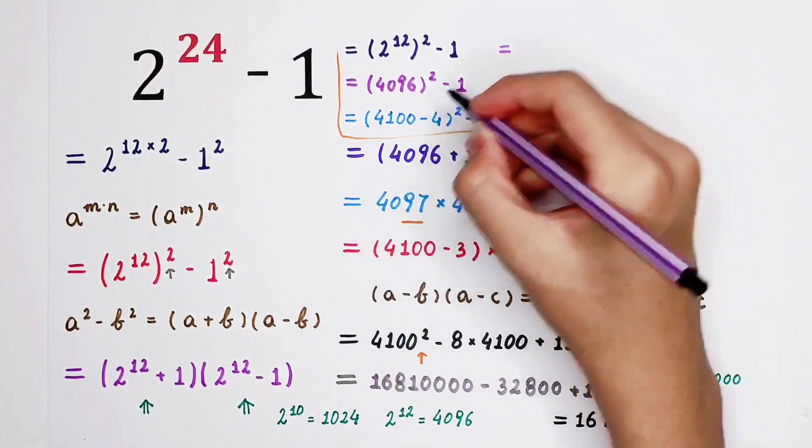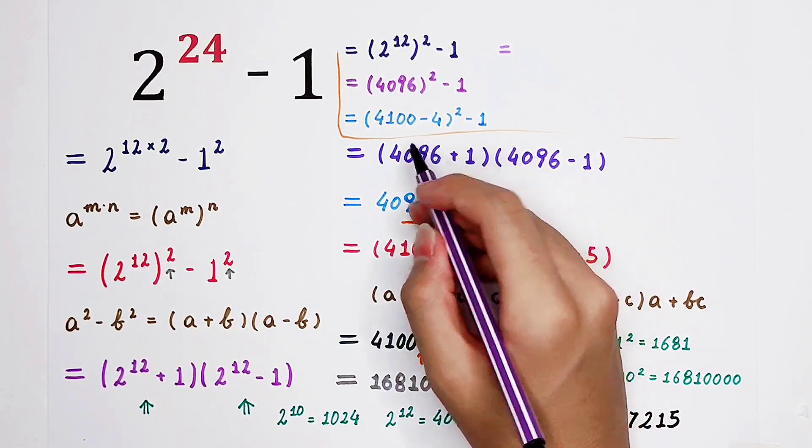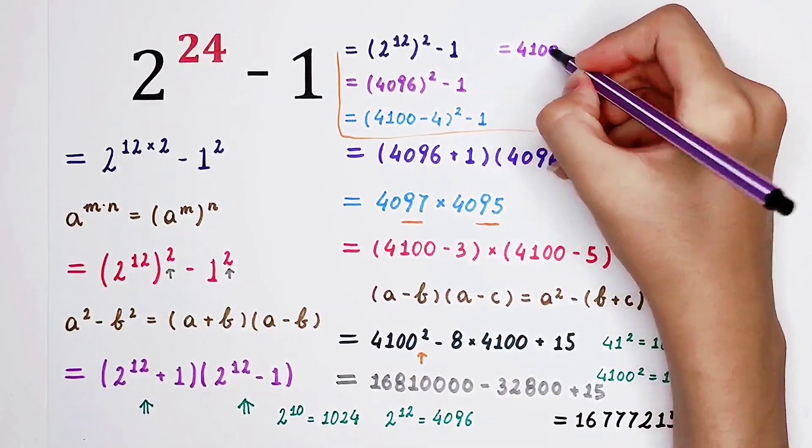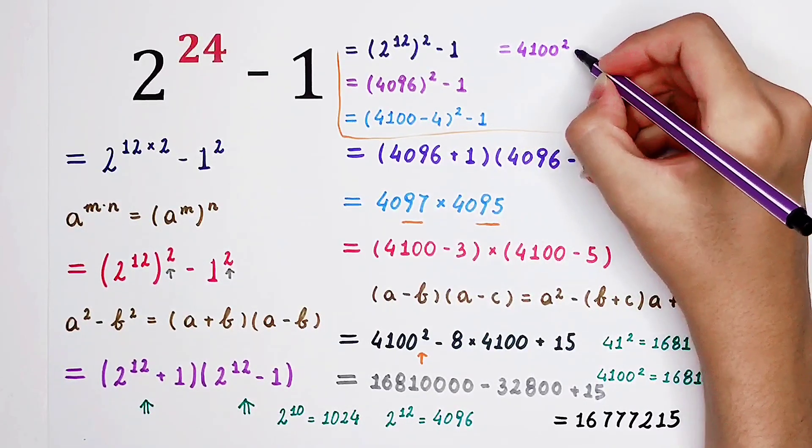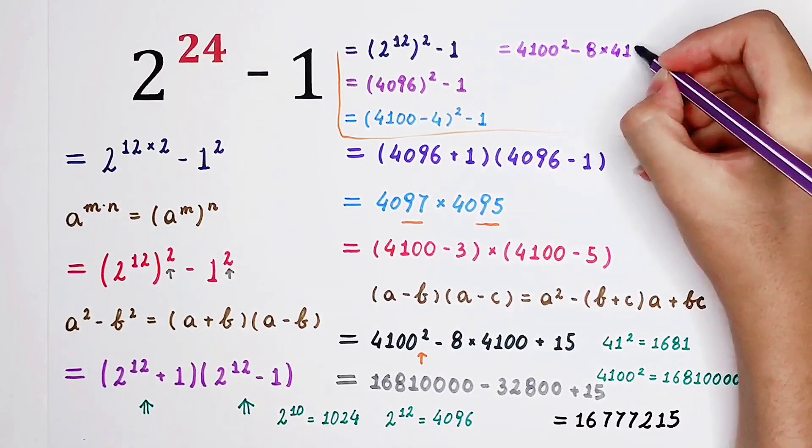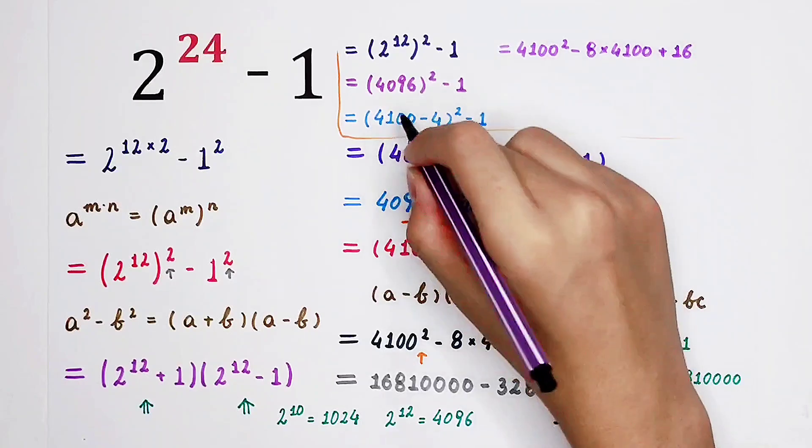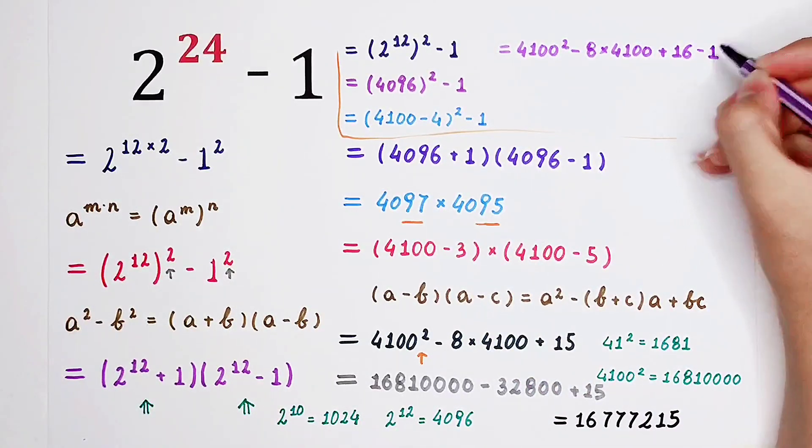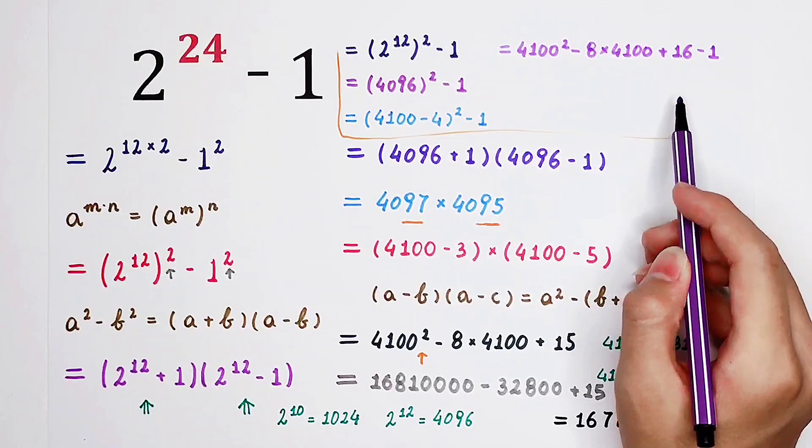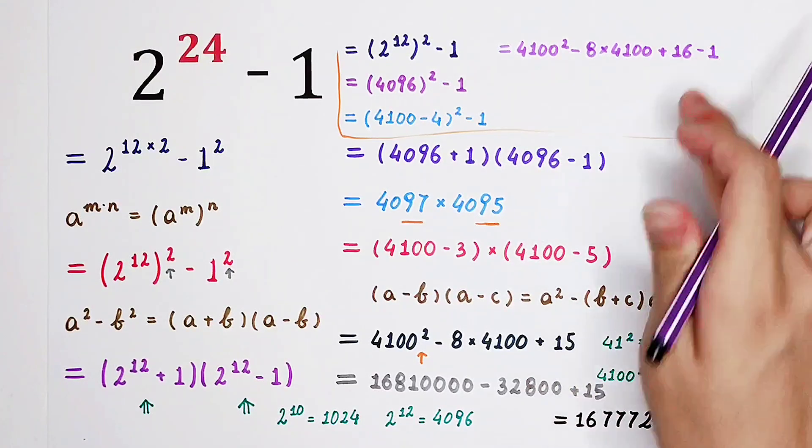So here is 4096 squared and then minus 1. Now I'm gonna write this guy, this 4096 as 4100 minus 4 and then all squared minus 1. Here, 4100 minus 4 or squared. We can use this formula. It is a squared plus b squared minus 2 times ab. It is 4100 squared minus 2ab, 8 times 4100, and then plus 16. 16 is 4 squared. Then minus 1. So you can see that, plus 16 minus 1 is plus 15. So they are identical.